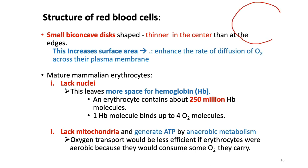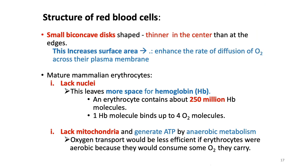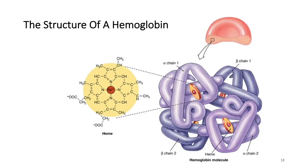The structure of red blood cells is closely related to its function. It has a small biconcave disc shape — thinner in the center and thicker at the edges — which increases the diffusion rate of oxygen across the plasma membrane. Mature mammalian erythrocytes also lack nuclei, leaving more space for hemoglobin. One hemoglobin molecule can bind up to four oxygen molecules. They also lack mitochondria so that oxygen transport is more efficient — they use anaerobic metabolism so they do not consume the oxygen they carry. Erythrocytes contain about 250 million hemoglobin molecules.